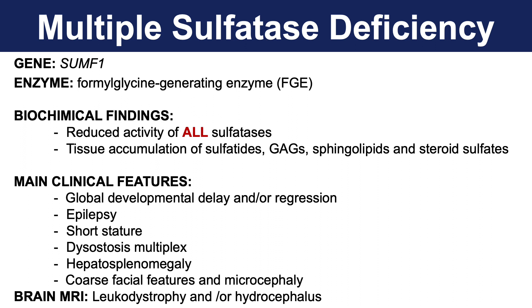This results in a very complex disease that is a combination of all the symptoms and signs of each individual sulfatase deficiency. The disease can present with developmental delay and regression, epilepsy, short stature, skeletal problems, hepatosplenomegaly, and coarse facial features. One of the major problems of the disease is white matter disease and hydrocephalus.